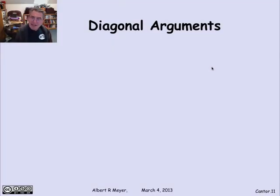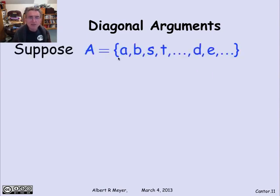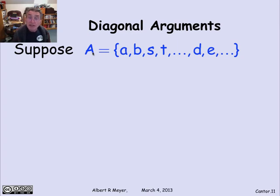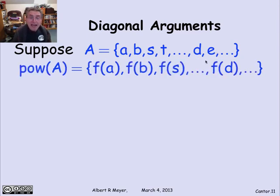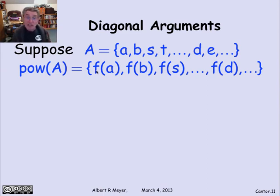It's a diagonal argument again, but now I mustn't assume that A is countable — I'm not going to assume I can really list the elements of A, but we'll think about it as though we could. Suppose A is this set of elements: a, b, s, t, d, e — I'm scrambling the alphabet on purpose so you don't assume A is countable. I'm just writing out a sample. Suppose I'm trying to get a surjection from A to the power set of A, with a function f mapping each element to some subset of A. With such a setup, I can draw a matrix and extract a diagonal set not in the range of f.